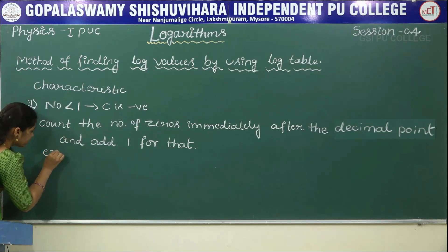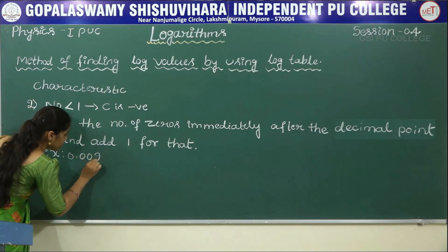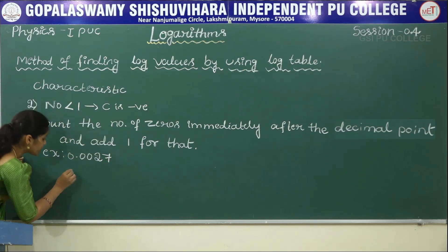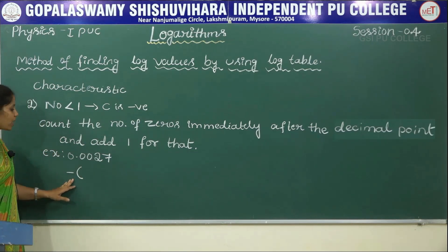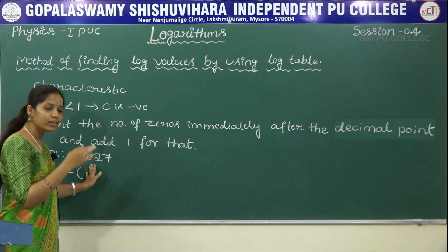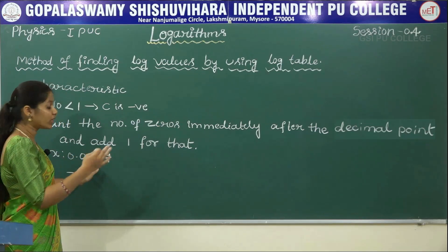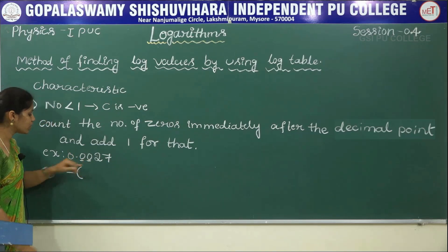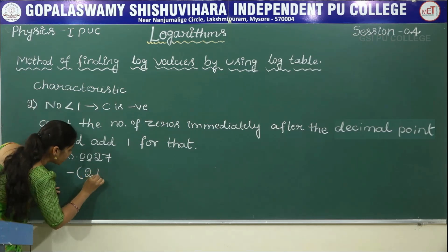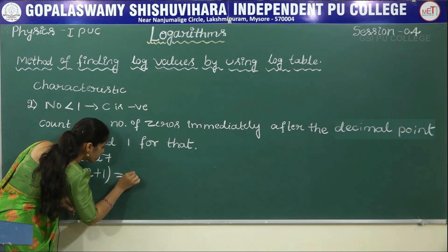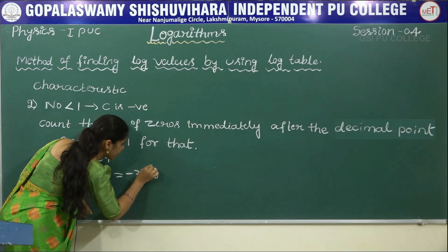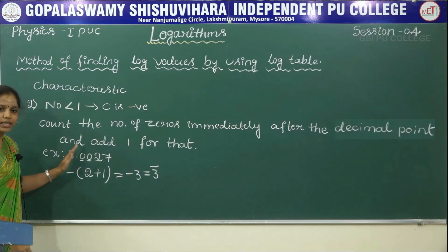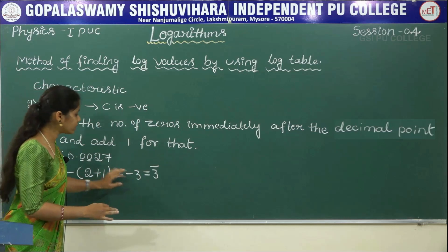For example, consider 0.0027. This number is less than one, so its characteristic is negative. We count the zeros immediately after the decimal point — there are 2 zeros. We add one: 2 plus 1 gives minus 3. It can also be written as bar 3. So the characteristic of 0.0027 is bar 3.